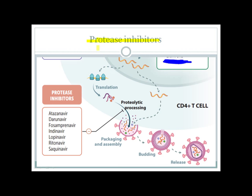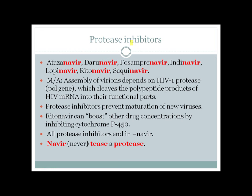Protease inhibitors are a very important group of antiretroviral drugs. After transcription, new HIV RNA can undergo translation or remain unchanged. If translated, it forms many proteins that require processing by an enzyme called protease. If this processing is inhibited, the viral genome and proteins cannot assemble into a complete virion, inhibiting the packaging, assembly, and release of progeny virions. The most common protease inhibitor drugs include atazanavir, darunavir, fosamprenavir, indinavir, lopinavir, ritonavir, and saquinavir — all ending in '-navir'.